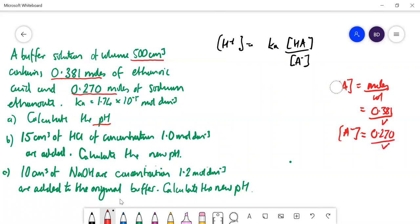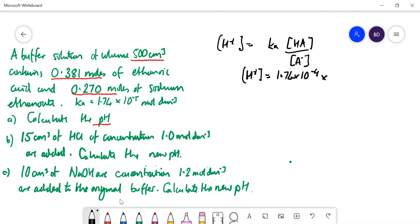So let's put those numbers in, work out the pH. H+ concentration is equal to 1.74 times 10 to the minus 5 multiplied by 0.381 over V over 0.27 over V. Remember I said that this ratio is always about 1, isn't it?